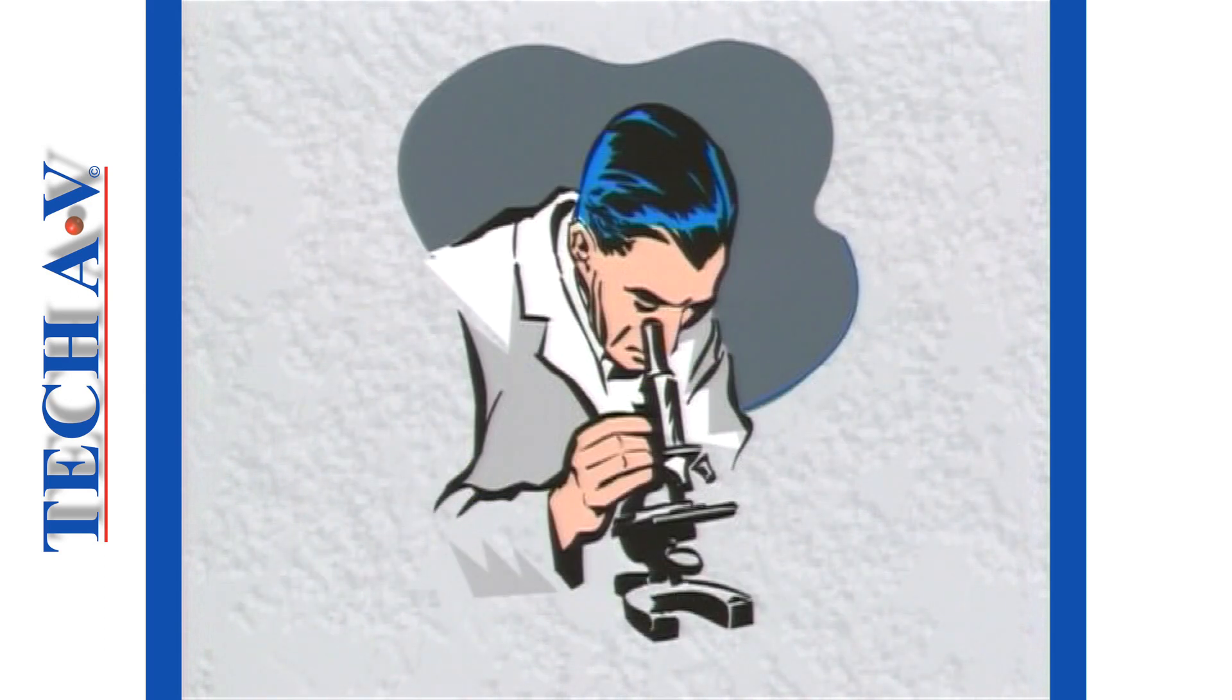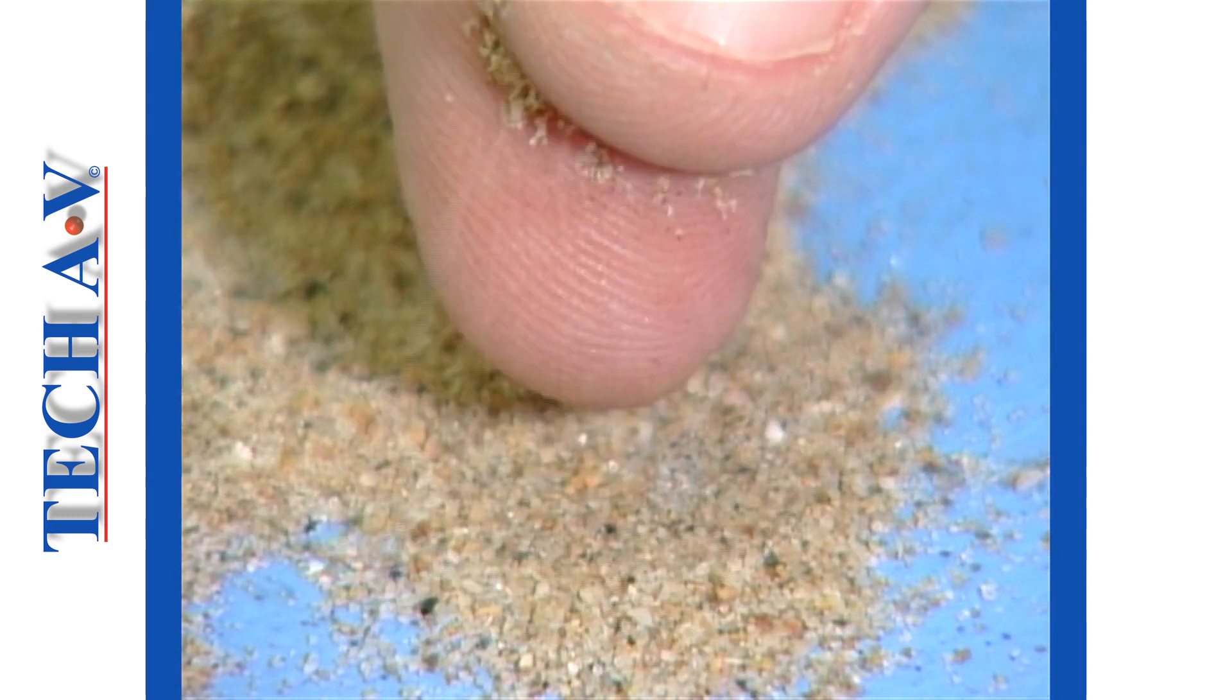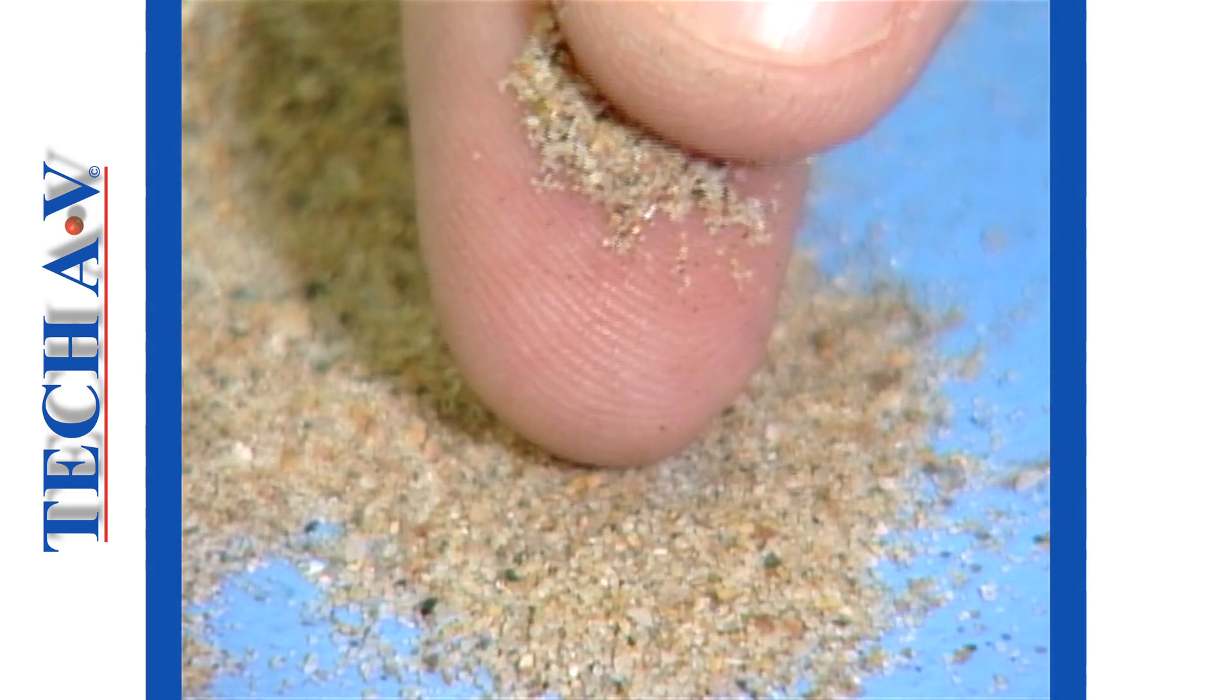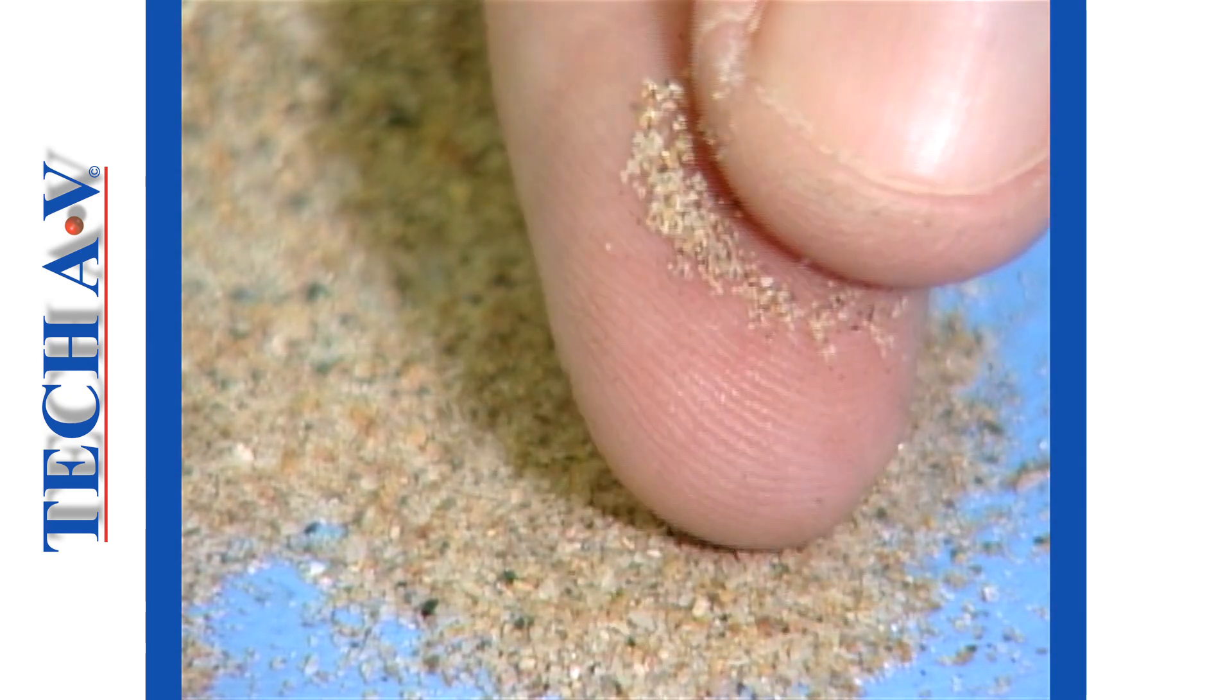To help you appreciate just how small we're talking, let's compare some familiar substances. Here we have some coarse sea sand, consisting of millions of individual grains. A single grain of sand has a diameter of roughly 100 microns.